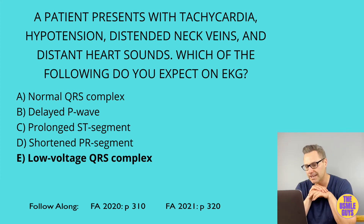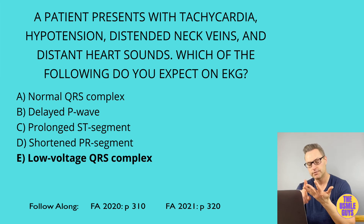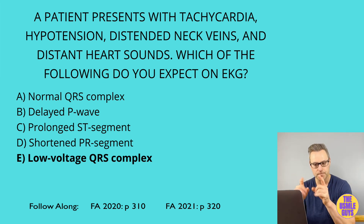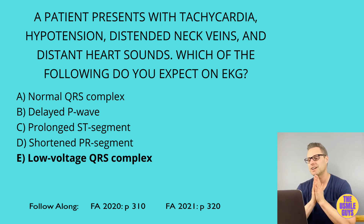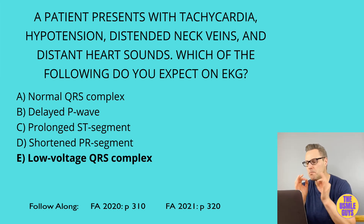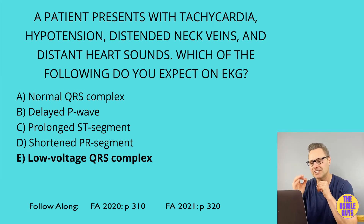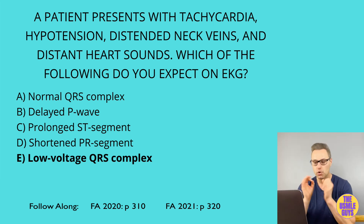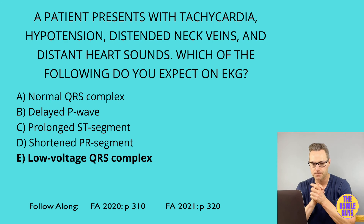The symptoms described in this vignette are those of Beck's triad: hypotension, distended neck veins, and distant heart sounds. Additionally, a patient with tamponade will have tachycardia and pulsus paradoxus, which is characterized by a decrease in the systolic blood pressure's amplitude by more than 10 millimeters of mercury during inspiration. On EKG, watch out for low-voltage QRS complexes and electrical alternans, which is when the QRS complex has an alternating amplitude throughout the EKG.